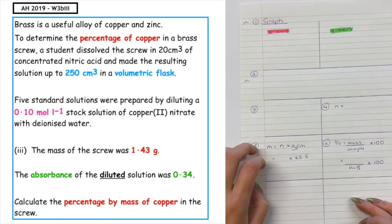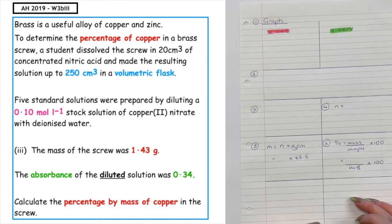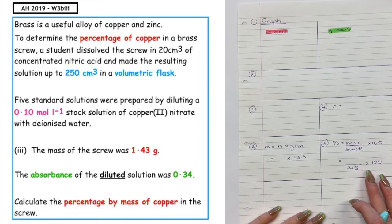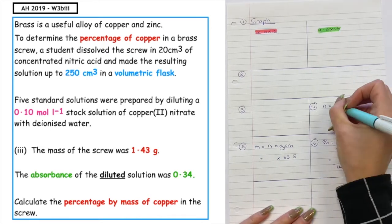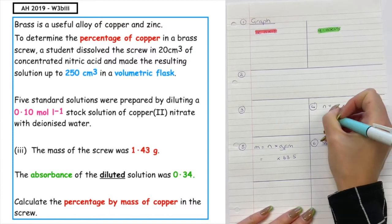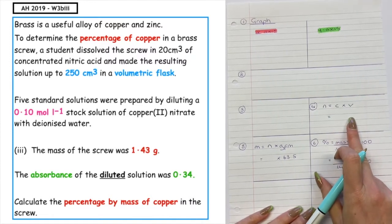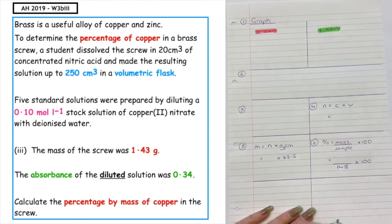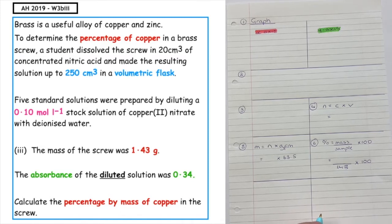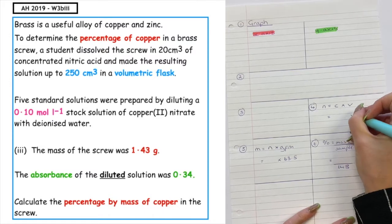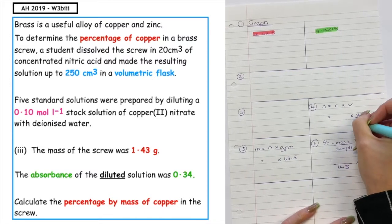We know that we've got two triangles, we can either use the MNGFM triangle or the NCV. If we scan the question, we can see that we have got concentration given in the graph as the x-axis unit. So we're going to be using N equals C times V. We want to scan the question to see what the volume is of our sample. If we go all the way up to the top, we can see that the resulting solution was made up to 250 centimeters cubed in a volumetric flask. So we would do times 250 divided by 1000.